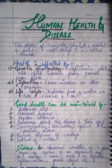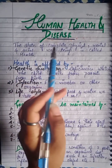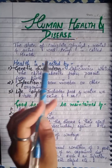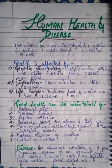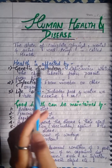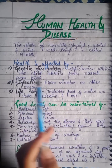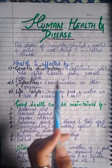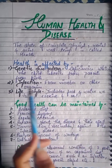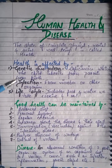Hello friends, today we will start Human Health and Diseases. The state of complete physical, mental, and social well-being is called health. If a person is mentally, physically, socially, and emotionally fit, we call them a healthy person. Health is affected by genetic disorders and deficiencies which a child inherits from parents from birth.